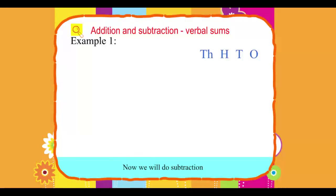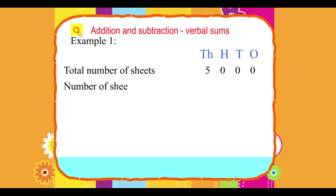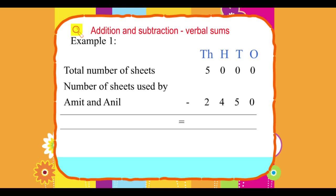Now, we will do subtraction. Total number of sheets: 5000. Number of sheets used by Amit and Anil: minus 2450. Equals 2550.